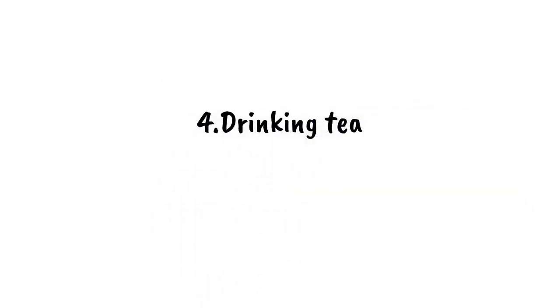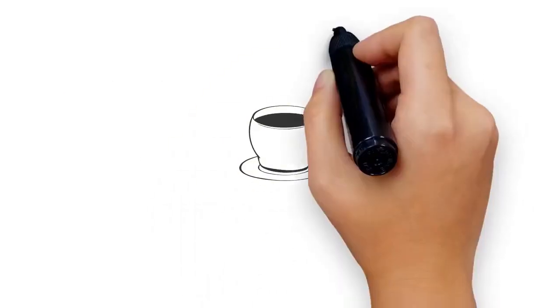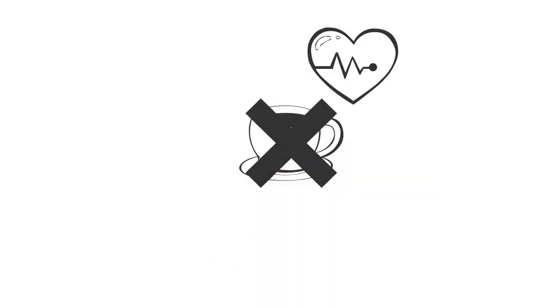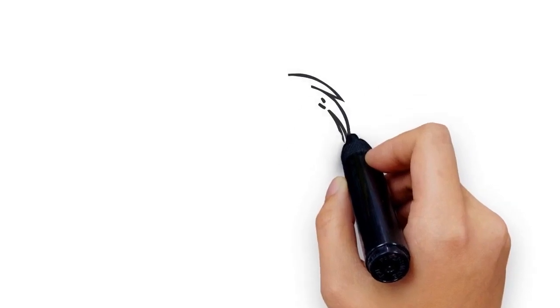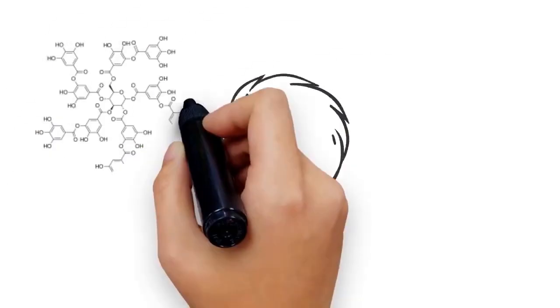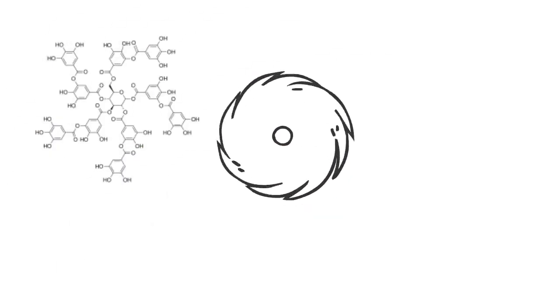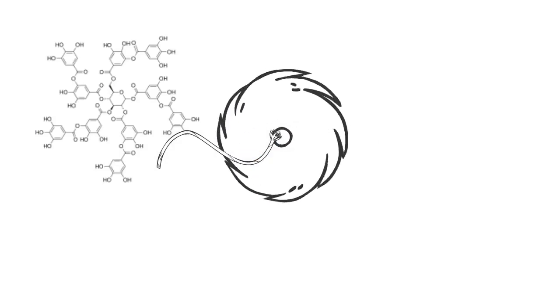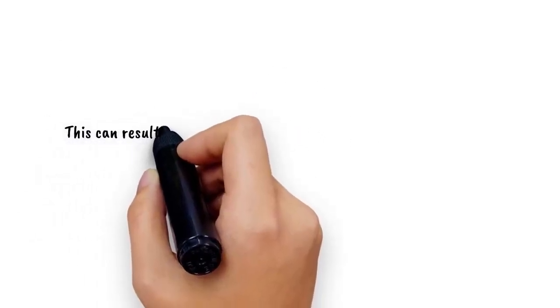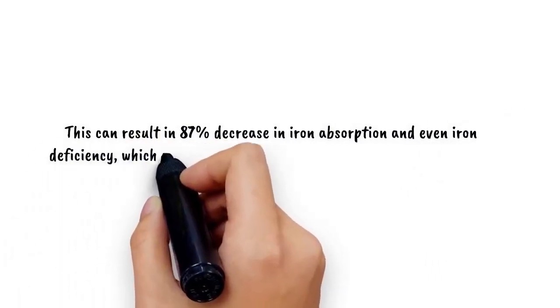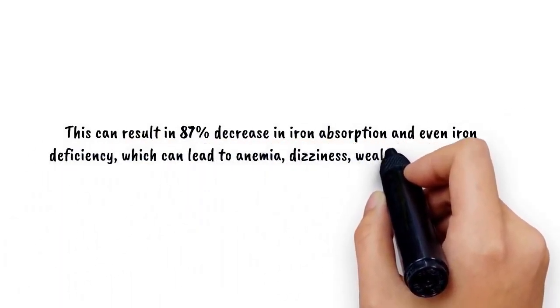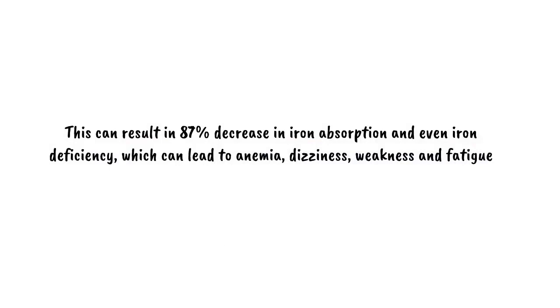Number 4: Drinking tea. Teas are healthy but shouldn't be consumed after a meal. Drinking tea after having a meal can interfere with iron absorption in your body, as tea contains tannic acid which binds to iron and protein from our food. This can result in an 87% decrease in iron absorption and even iron deficiency, which can lead to anemia, dizziness, weakness, and fatigue.